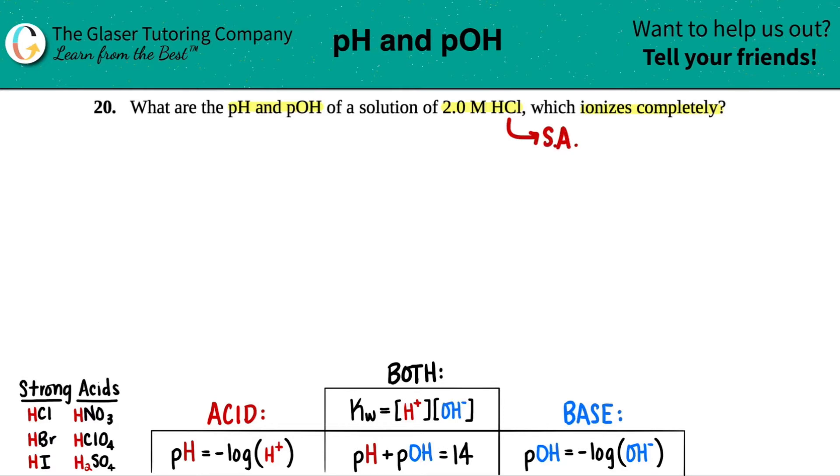There are only six strong acids on this earth. And those are these right here. And HCl is right on it. So we should memorize our six strong acids because all of them are going to ionize completely. And that tells us the sequence of how we're going to run this equation or do this problem.